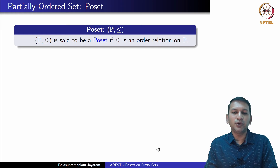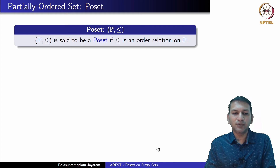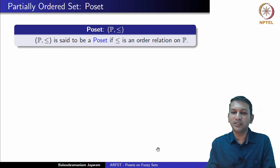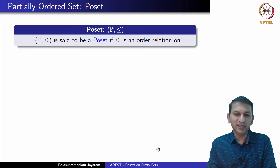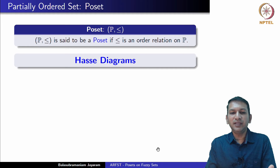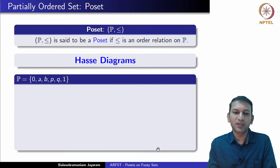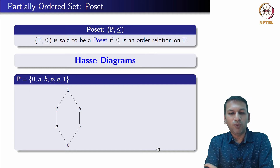We call the pair of the set with the relation a poset if this relation is an order relation. It is typical to indicate order relations by the less-than-or-equal-to symbol. If the set P is finite, then to show the order it is convenient to use what are called Hasse diagrams. Consider the set P which has six elements — one possible ordering of P gives us such a Hasse diagram.